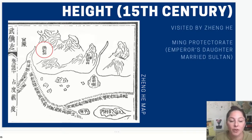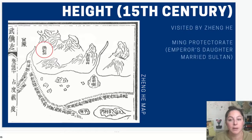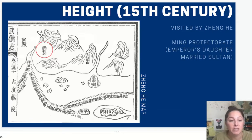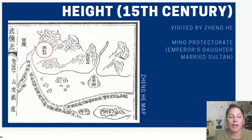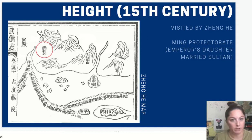There's actually a map from Zheng He's voyages identifying Malacca in a red circle. The Yongle Emperor told Zheng He to go there, make friends with them, and let them know that if they pay tribute, China will ensure they become a powerful state in the Southeast Asian region. The Ming Emperor's daughter even married the Sultan of Malacca — they developed a very close relationship. This is really the only reason Malacca becomes powerful, because after that they're no longer threatened by Siam or the Majapahit. No one wants to touch them once they have China's stamp of approval.